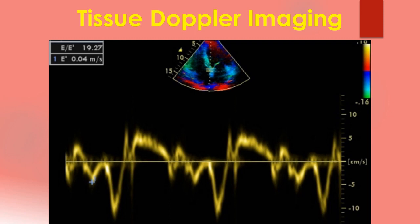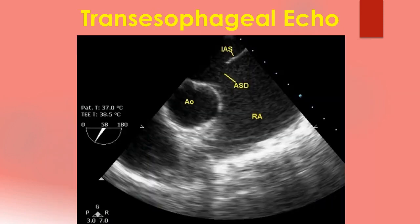Tracing in the lower part is tissue Doppler imaging from the medial mitral annulus. The images shown so far were from transthoracic echocardiography. Another mode is transesophageal echocardiography, in which the echo probe at the tip of an endoscope-like device is introduced into the esophagus. As the esophagus is just posterior to the heart, image quality is excellent.